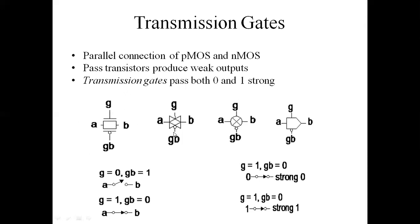This is the symbolic diagram of the transmission gate. The NMOS and PMOS are both present, connected in parallel combination, and a controlling signal is given. The controlling signal for NMOS is the complement of the controlling signal for PMOS.